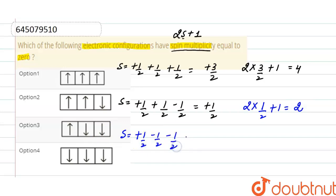So total spin is minus 1 by 2, and spin multiplicity is 2 into minus 1 by 2 plus 1, that is 0.